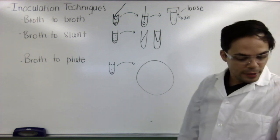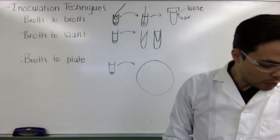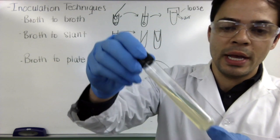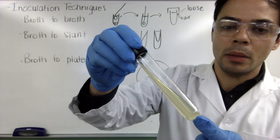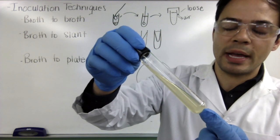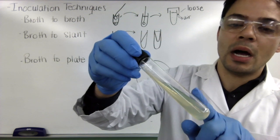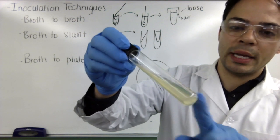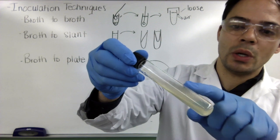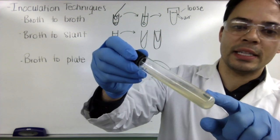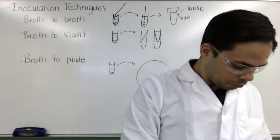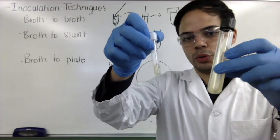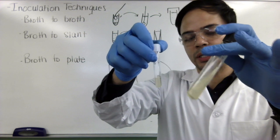The only exception is if you're growing a strict anaerobic, in which case you would close the tube all the way. But the bacteria we're working with here do need oxygen and need to respire, so we're going to leave the caps loose. The next one is from broth to slant. Here's an un-inoculated nutrient agar slant. It has the same formulation as the nutrient broth except it has agar in it, which causes the medium to form a jello-like consistency. That provides a surface onto which bacteria can grow on that slant portion.